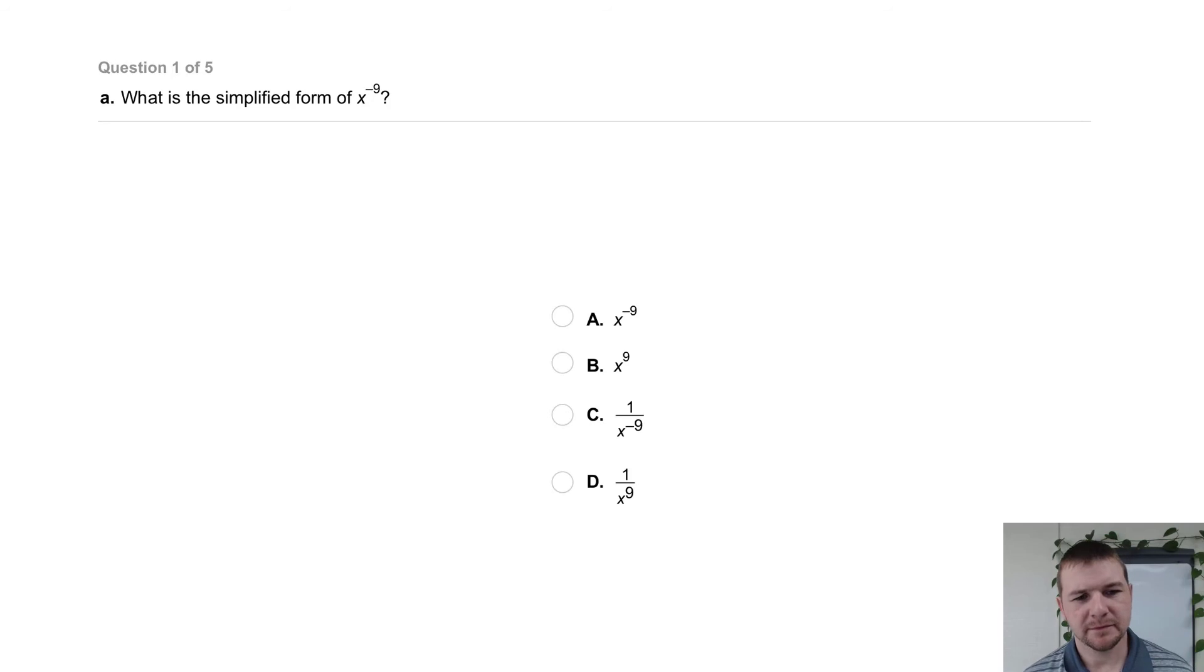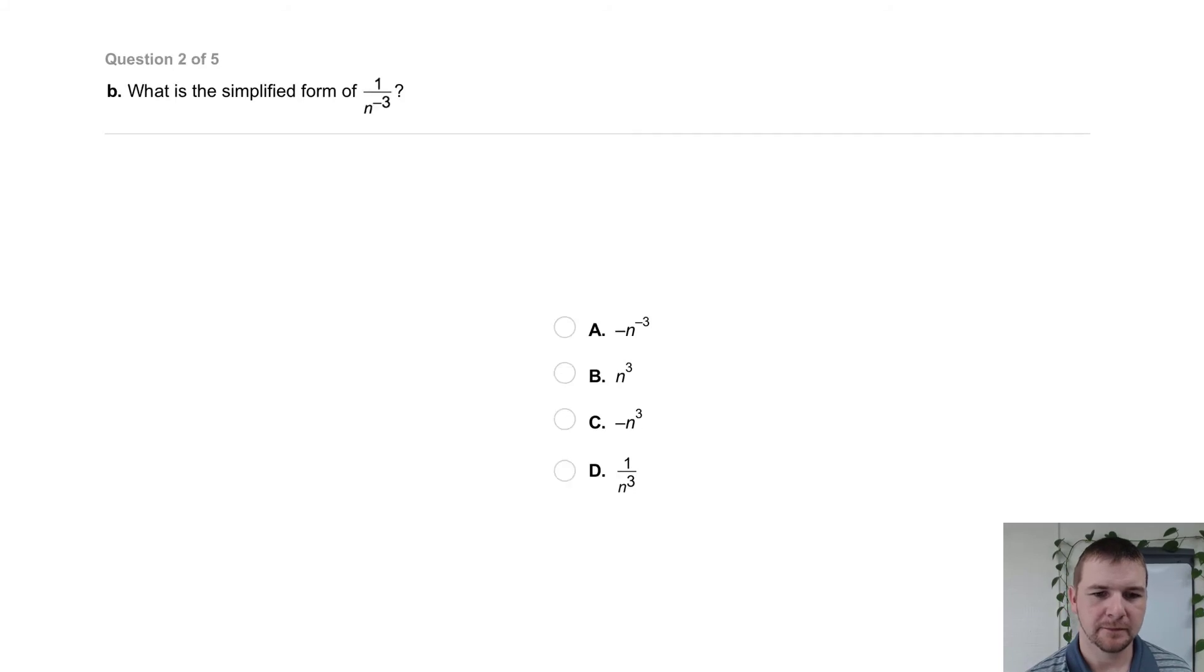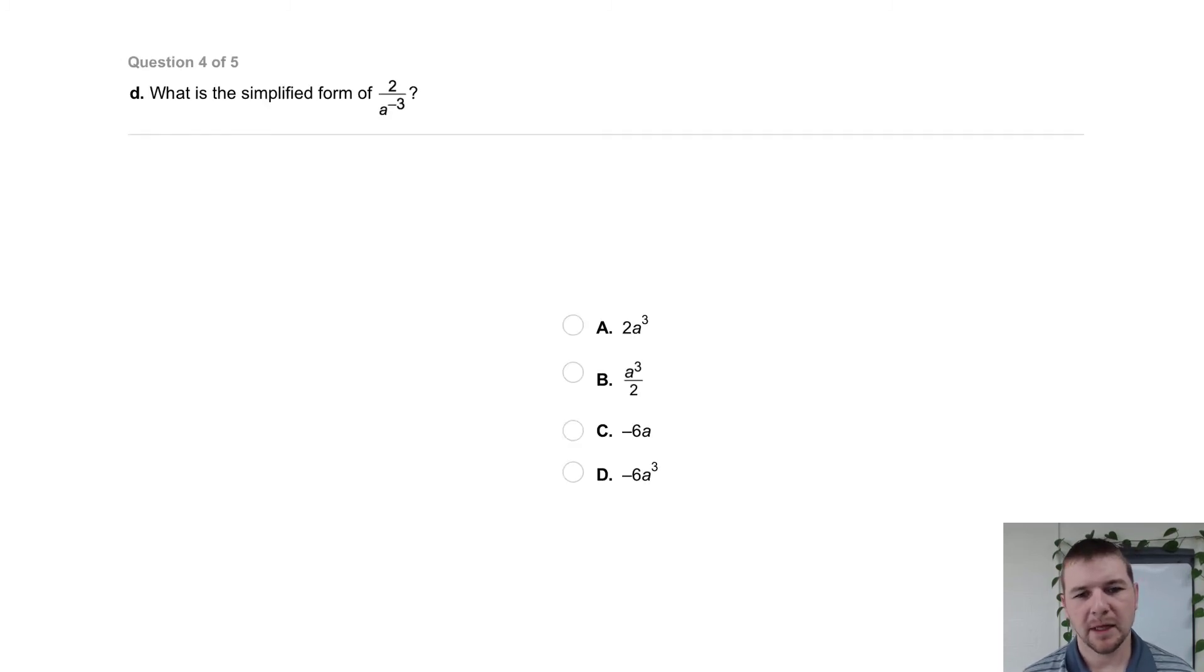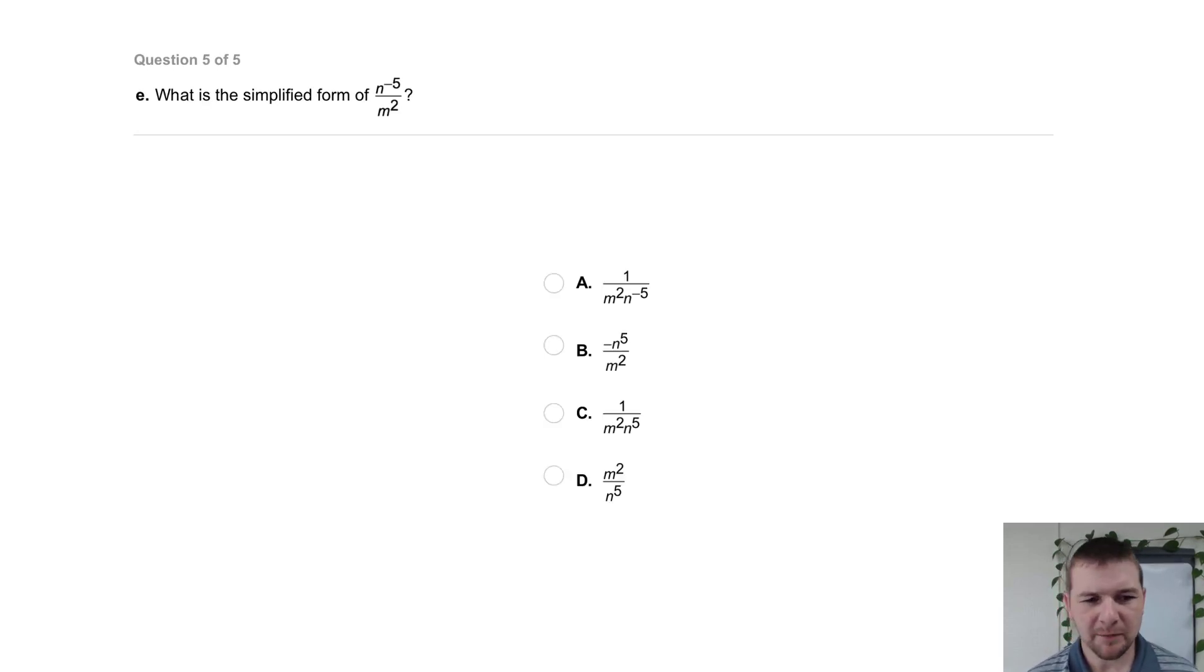Your turn. Part A: What is the simplified form of x to the negative 9th power? Part B: 1 over n to the negative 3rd power. Part C: 4c to the negative 3rd power b. Part D: 2 over a to the negative 3rd power. And finally part E: n to the negative 5th power over m squared.